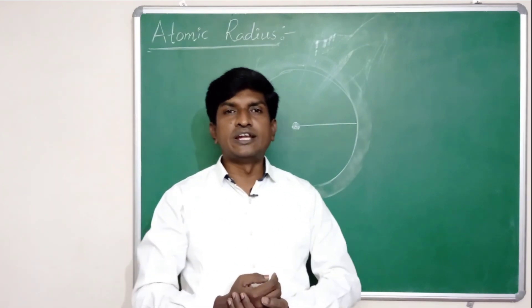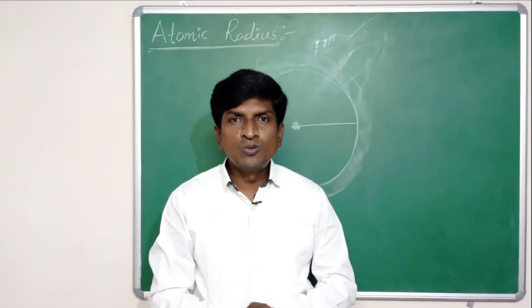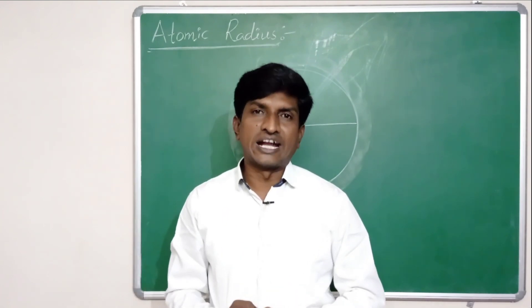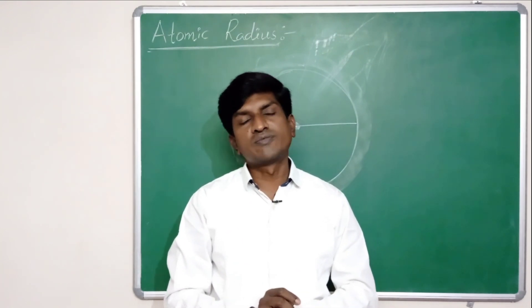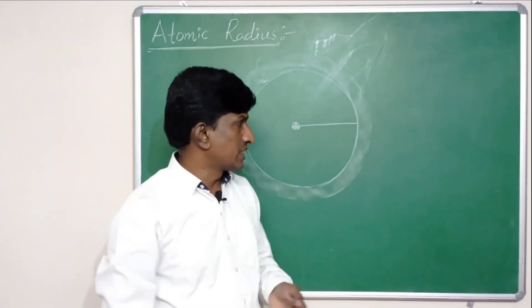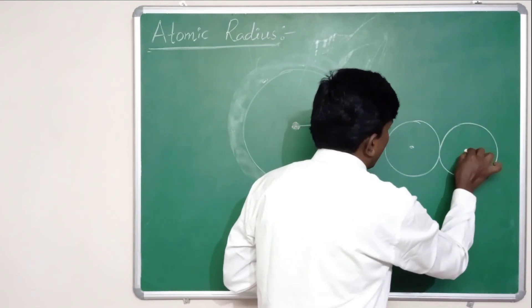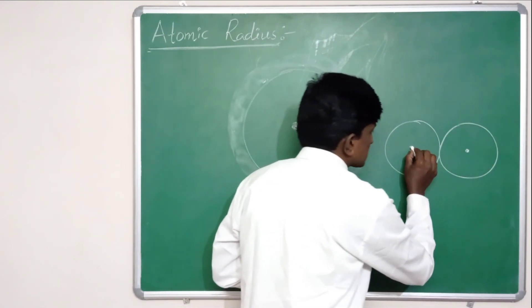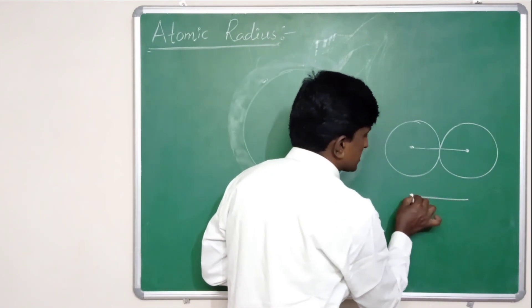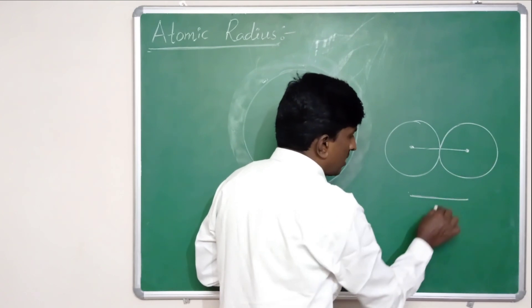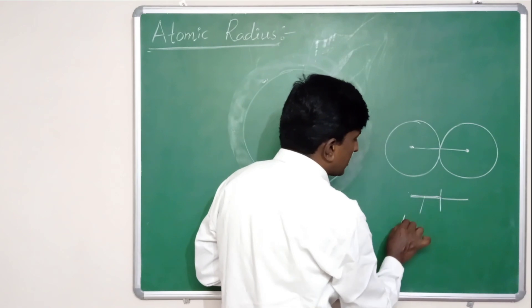So how do we calculate the atomic radius? To measure it, we measure the distance between the nuclei of two adjacent atoms, and then half of that distance is taken as the atomic radius of that element. For example, in a solid, two atoms are present. We first measure the distance between their nuclei, and half of that distance is said to be the atomic radius.